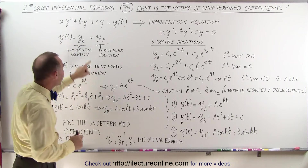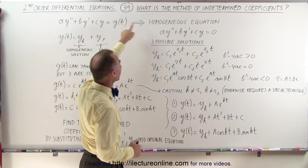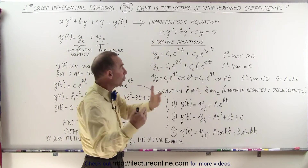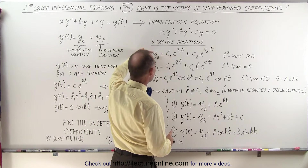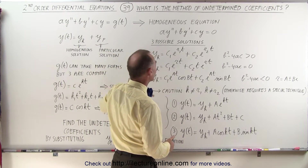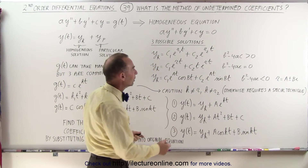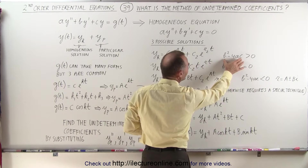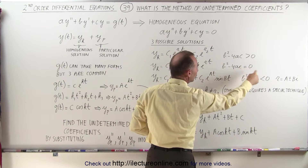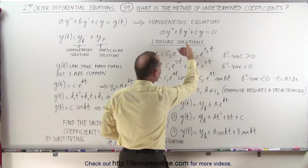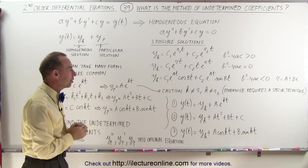The way we find the homogeneous portion of the solution is to set this function equal to zero, making it into a homogeneous equation, and solve that. There are going to be three different solutions — we use a characteristic equation, find the roots of that equation, and depending upon whether b squared minus 4ac is larger than, equal to, or less than zero, we get these three types of solutions for the homogeneous part.